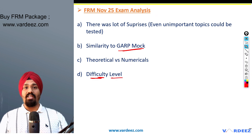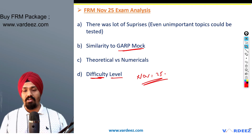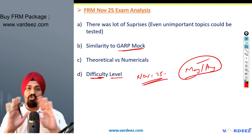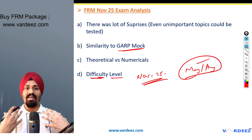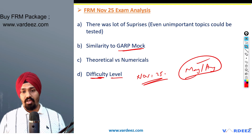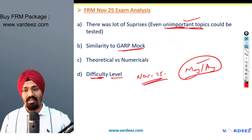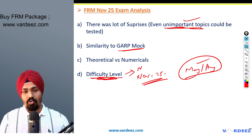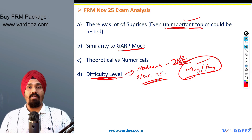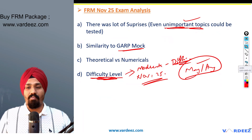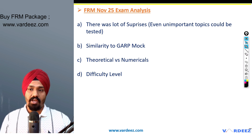Regarding difficulty level: as reported by many students, November 2025 was much more difficult compared to May and August. Going forward, make sure you understand concepts deeply and solve as many questions as possible for better conceptual clarity. Even if a topic feels untestable, cover it — it could appear. Overall, the difficulty level was moderate to difficult, though well-prepared candidates may have found it manageable.